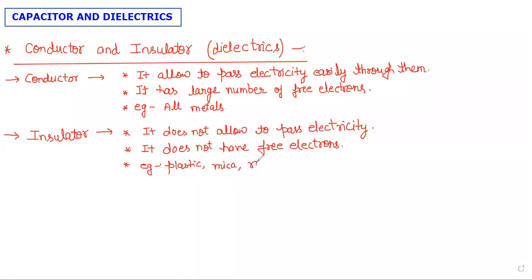Examples of insulators include Mica, Rubber, and Pure Water. Note that Mineral Water is not an insulator — only Pure Water, i.e., H2O, is also an insulator.